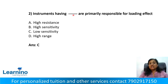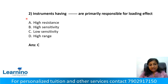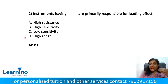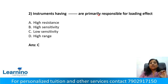Question number 2. Instruments having what characteristic are primarily responsible for loading effect? Option A, high resistance; option B, high sensitivity; option C, low sensitivity; option D, high range. The answer is low sensitivity — instruments having low sensitivity are primarily responsible for loading effect. Option C is correct.